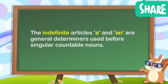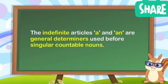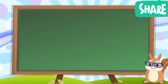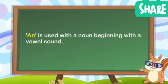The indefinite articles A and AN are general determiners used before singular countable nouns. A is used before a noun beginning with a consonant sound. AN is used with a noun beginning with a vowel sound.